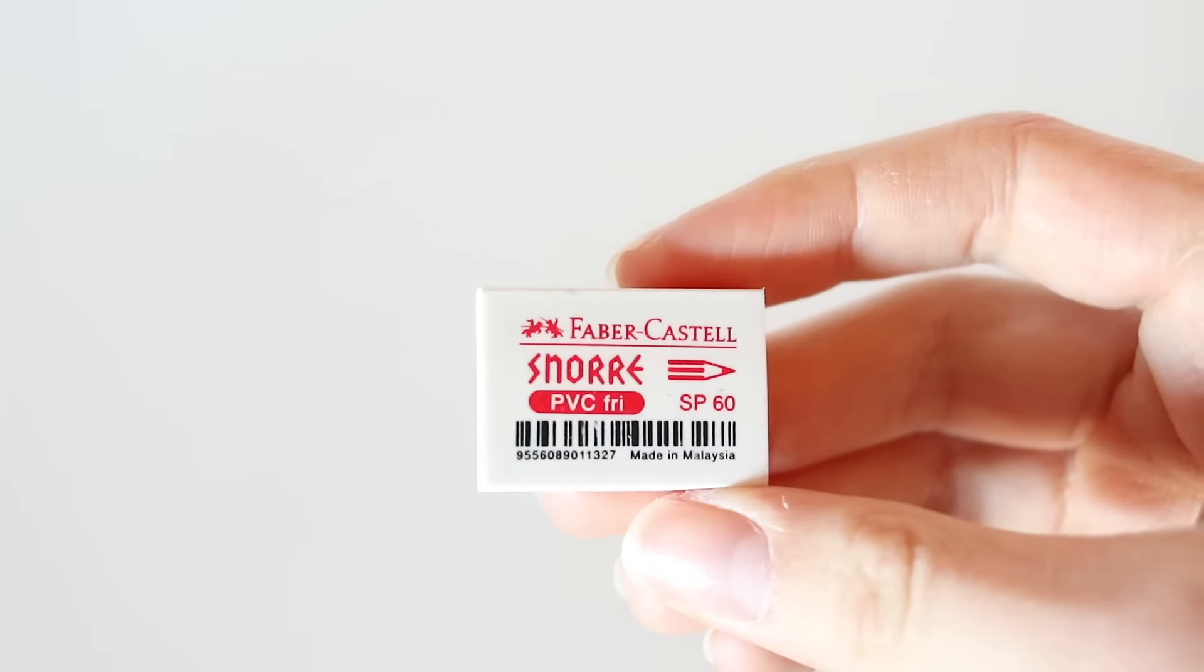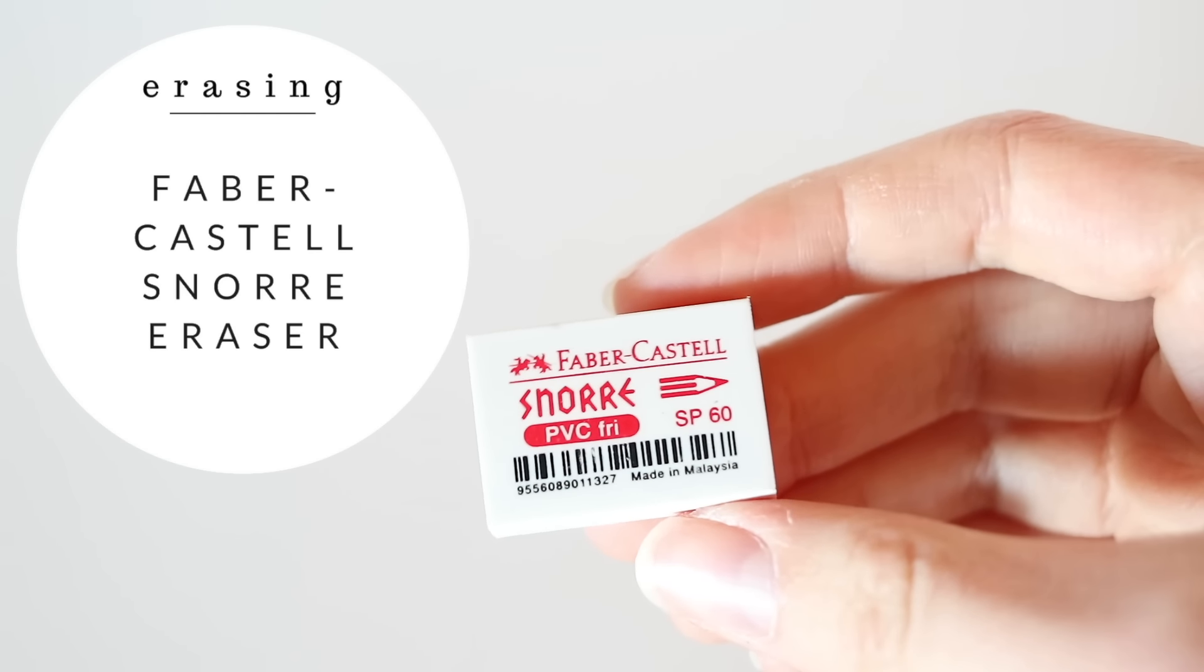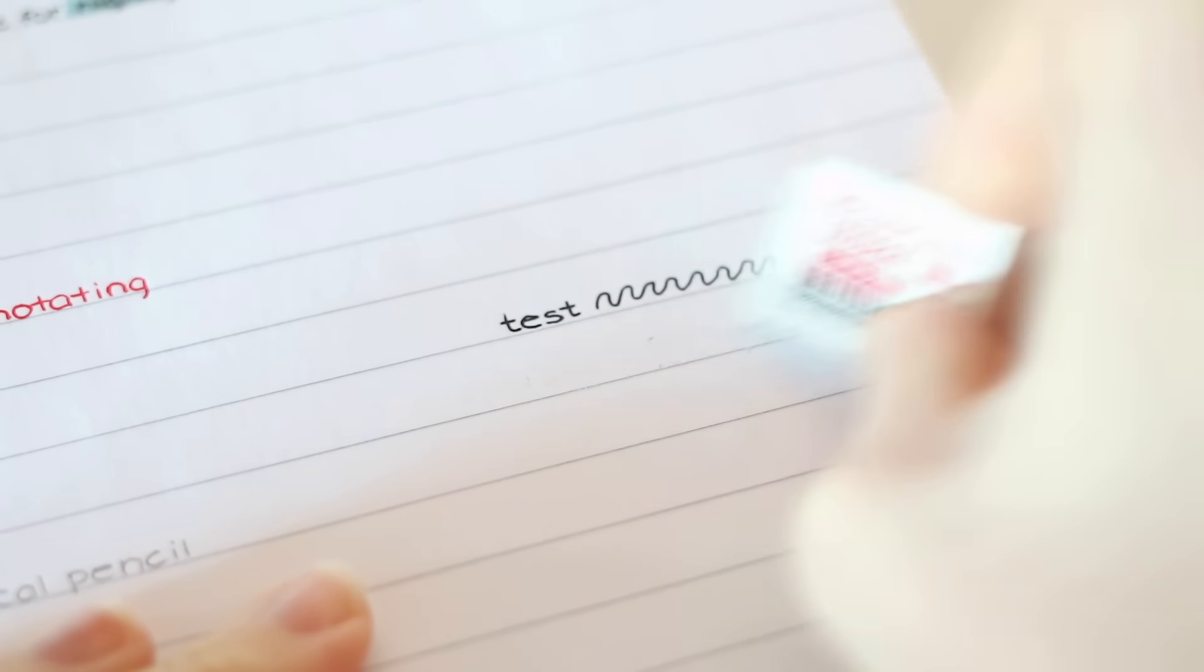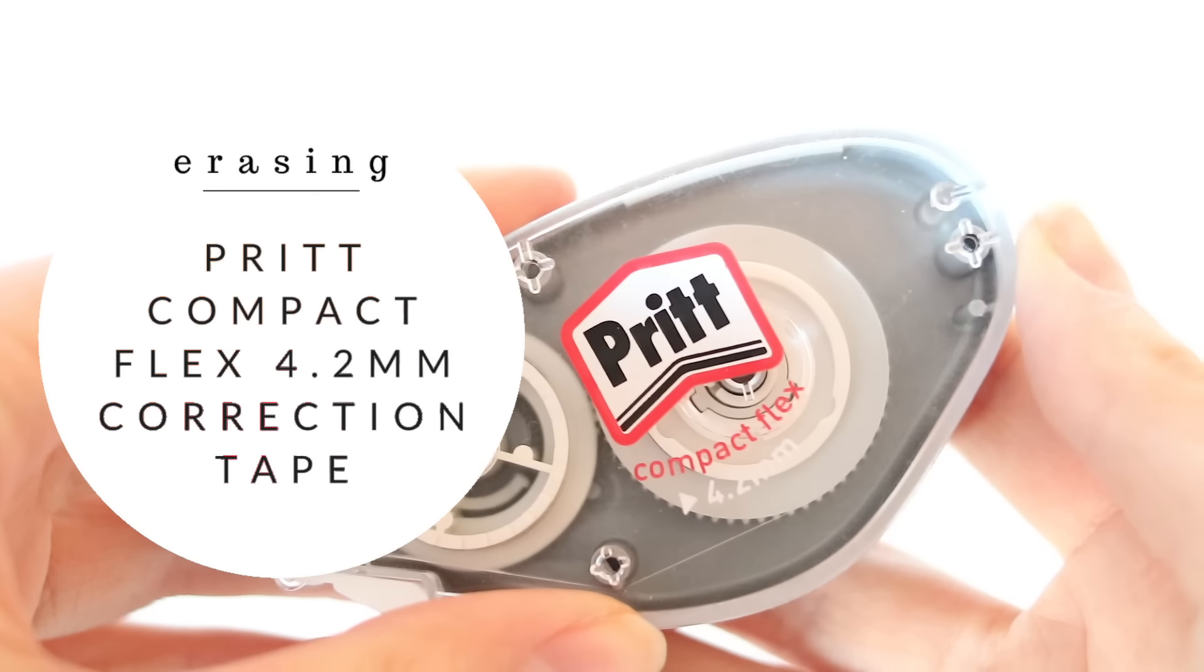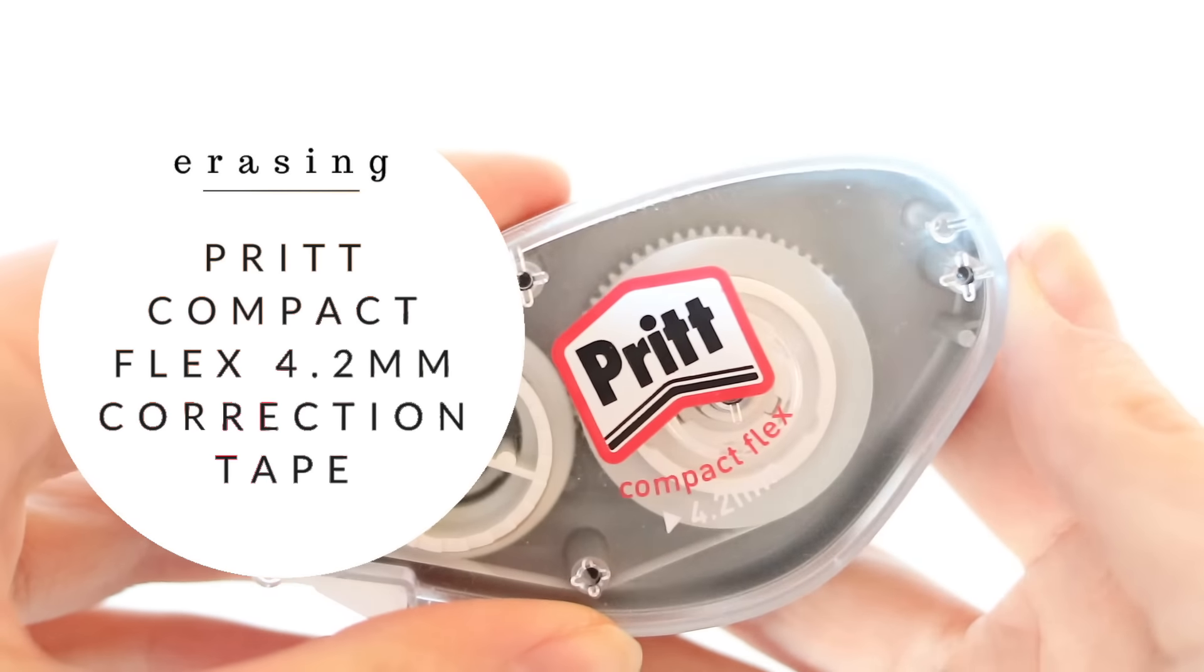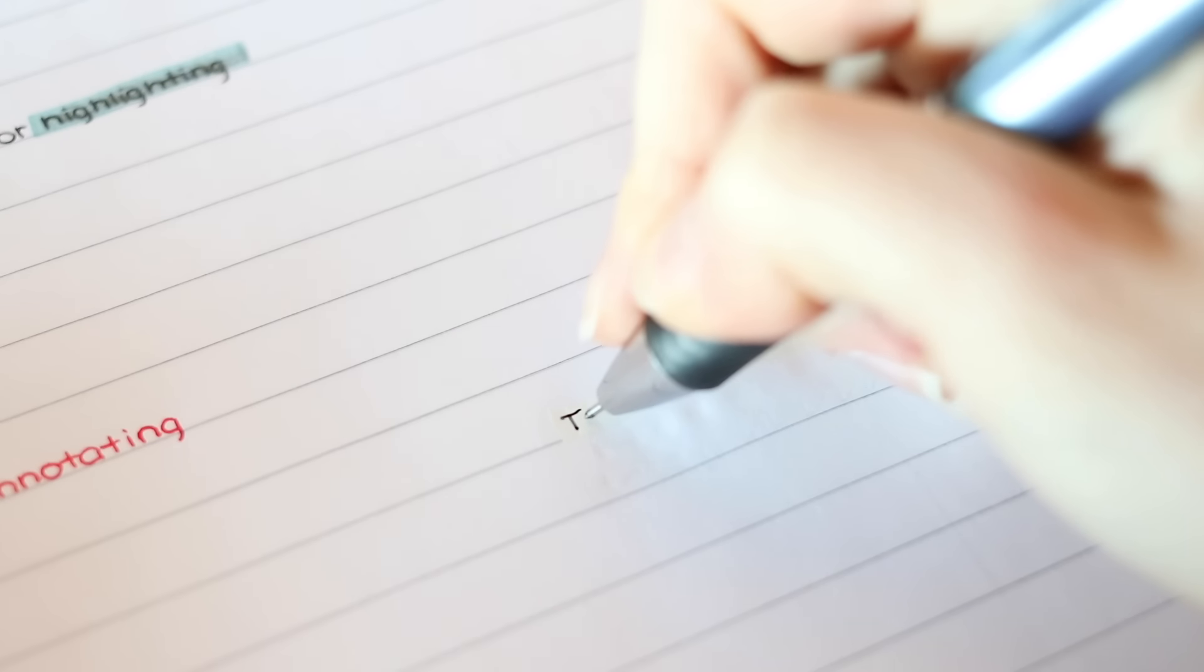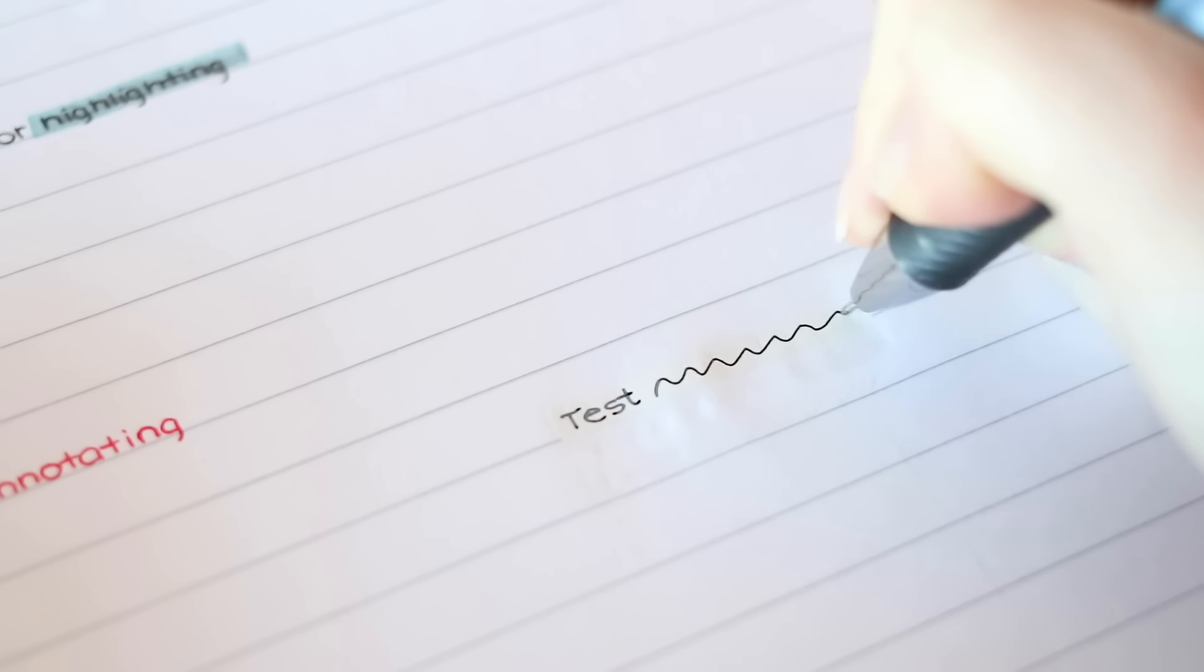The next category is erasing and correction and here I'm just using the cheapest products from my local bookstore but they actually work surprisingly well. The eraser I use is this Faber-Castell one. It is cheap and it works so I couldn't be happier with it. When I write with pen I use correction tape and I use this Print Compact Flex correction tape. I prefer tape over correction fluid as it dries immediately and it's a lot smoother so you can write on top of it and this is by far the tape that works the best in my opinion.